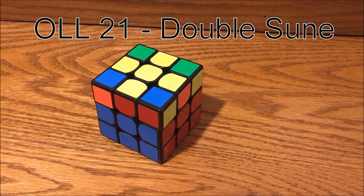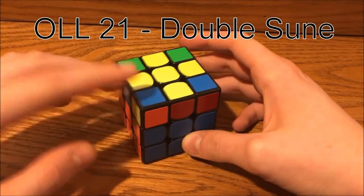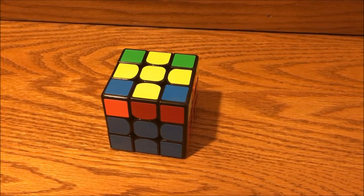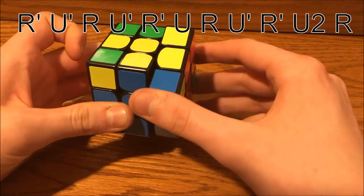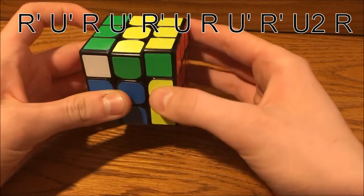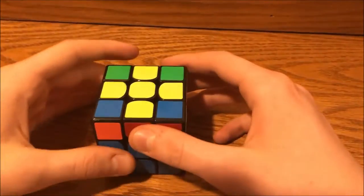So this is the first of the zero corner cases, which has both headlights on this side and headlights on this side. To solve this case, hold the headlights to the sides and do this algorithm. And here it is fast.